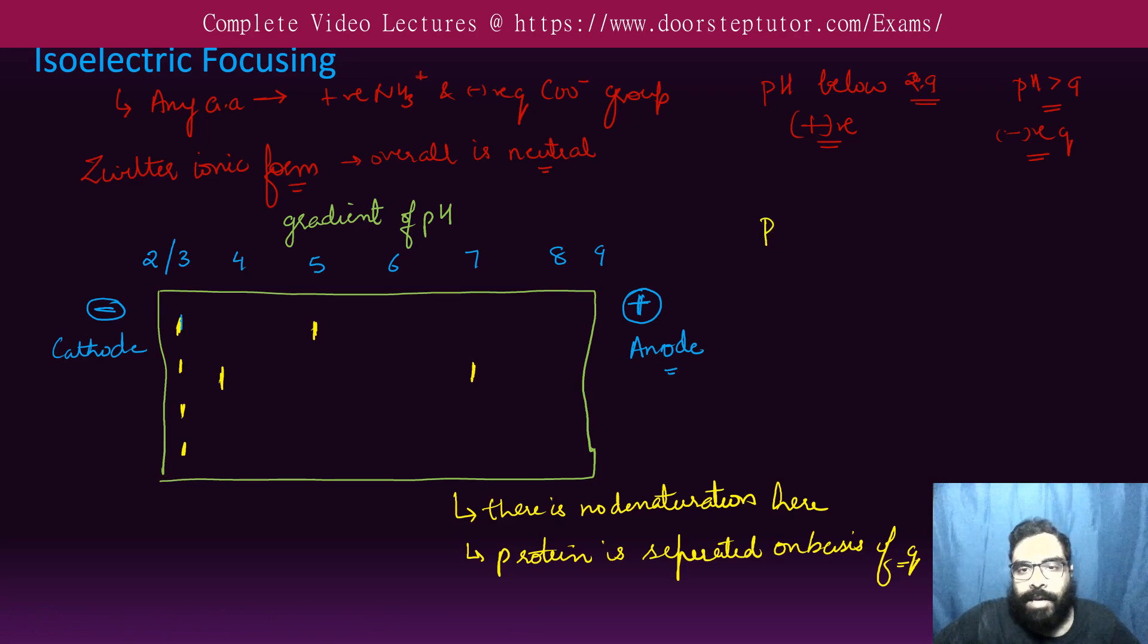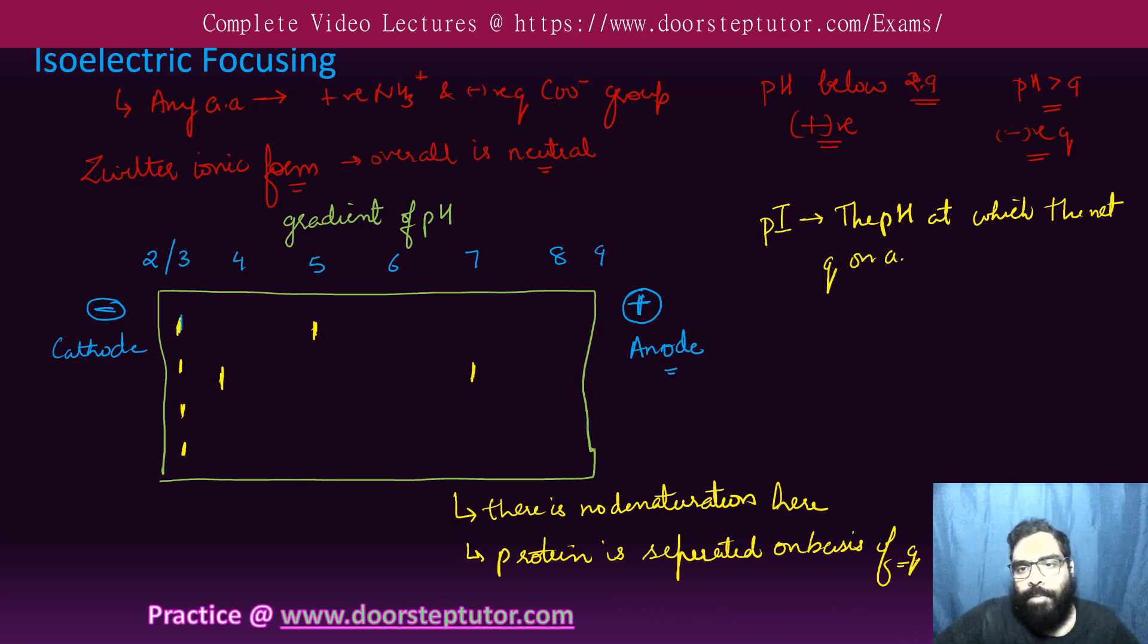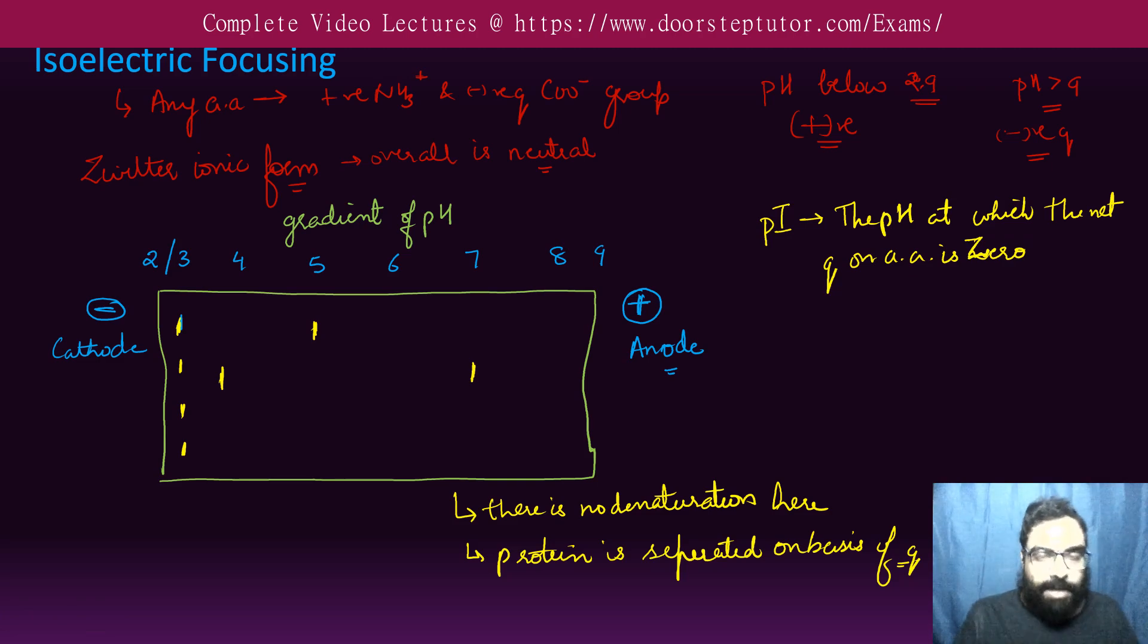Now this zwitterionic form, this is known as pI. pI means the pH at which the net charge on amino acid is zero. The net charge on the amino acid is zero, that is known as pI. Now according to this pI, according to this pI, at any pH if the pI is equal to pH at that point, for example if I say that...